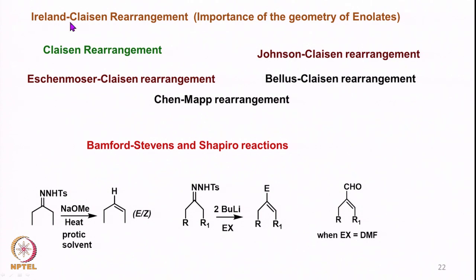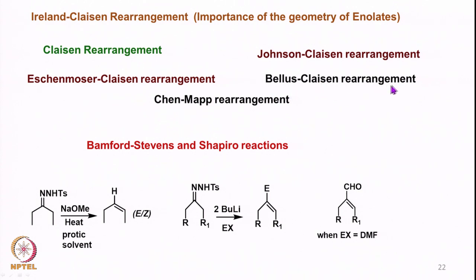Then we looked at the Ireland-Claisen rearrangement, discussing the importance of enolate geometry. The formation of the enolate itself was very important, and how the presence or absence of HMPA in THF leads to one enolate geometry over the other. In that context we looked at Claisen rearrangement and its various modifications: Johnson-Claisen, Eschenmoser-Claisen, Bellus-Claisen, Chan-Lam rearrangement, Aza-Claisen, and Thia-Claisen rearrangements.